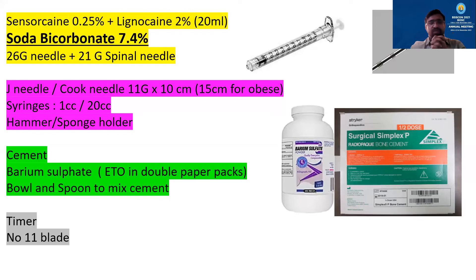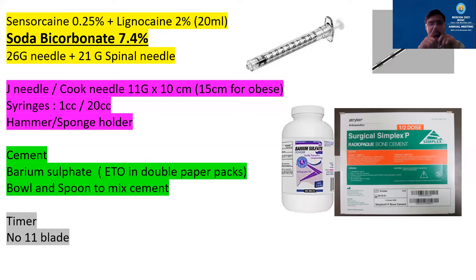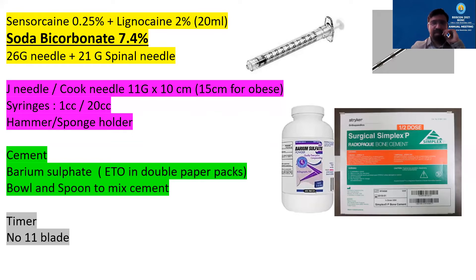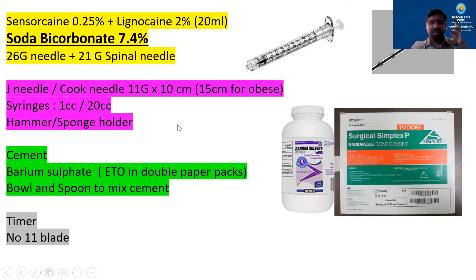Now, let's discuss the technique. What I commonly use is local anesthesia. You will need a Jamshidi needle — I prefer Cook needles because they are very sharp and needle placement becomes much easier. You will also need cement; there are various vertebroplasty cements available. The cheapest option is Simplex P half dose, which is antibiotic-loaded but not as radio-opaque. To make it properly radio-opaque, you need to add barium sulphate cement, which comes in paper packs. You also need general instruments like a hammer and blade.